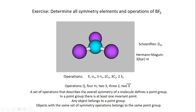The Schoenflies symbolism identifies a horizontal mirror plane as well as three vertical mirror planes. The horizontal mirror plane is within the plane of the molecule, whereas the vertical mirror planes go through the three B–F axes. In the Hermann-Mauguin formalism, we simply say there are four mirror planes and do not distinguish them — there are just four M.